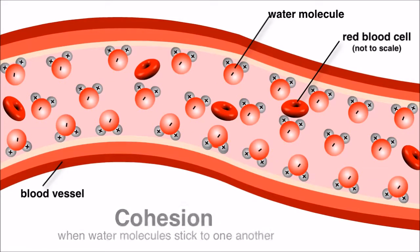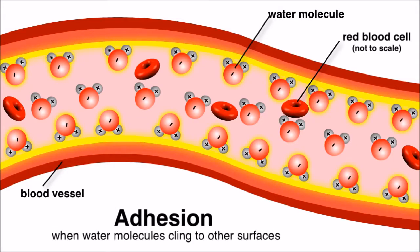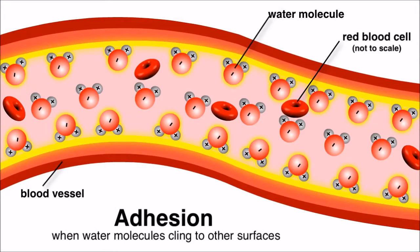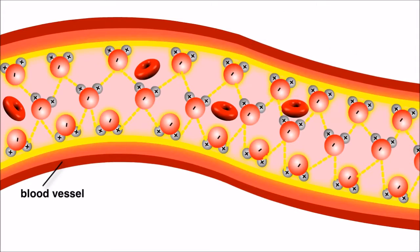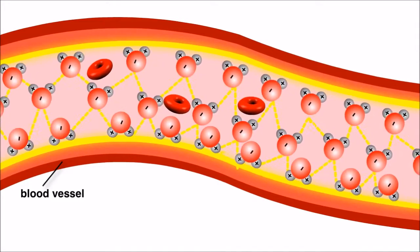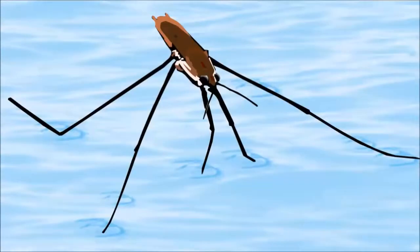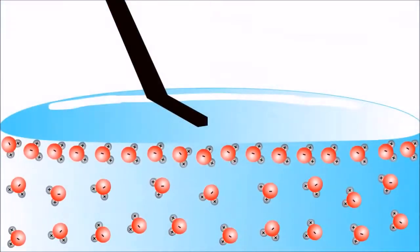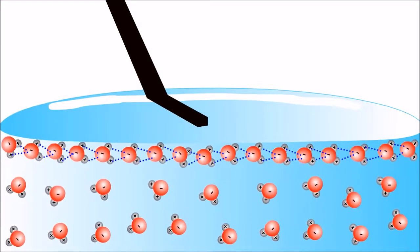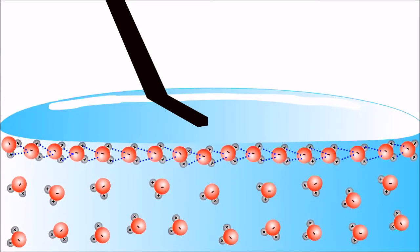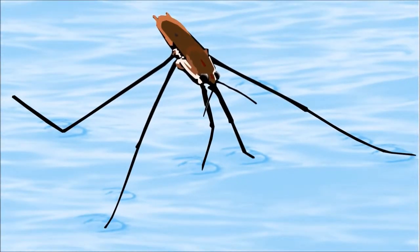Water molecules are also cohesive and adhesive. Hydrogen bonds cause water molecules to stick together - that's cohesion. Polar bonds also give water an adhesive property - the ability to cling to other polar surfaces. Water fills the internal transport systems of plants and animals because of these properties, allowing efficient transport of nutrients and waste. Water also has a high level of surface tension.